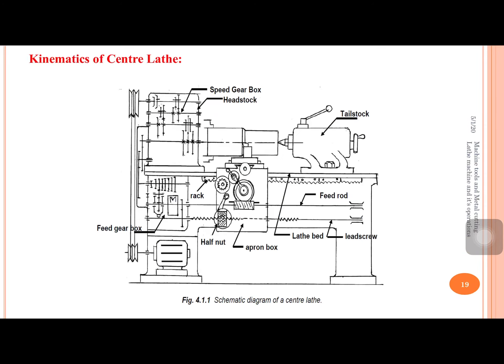Good afternoon friends. Today I received a query related to the kinematics of a center lathe, so let us start the discussion in this video. When talking about the kinematics of a center lathe, we need two kinds of motion: rotary motion for the work part and feed motion for the cutting tool. The cutting motion is the rotation of the work part. Feed motion has three kinds: longitudinal feed, cross feed, and angular feed. Longitudinal feed and cross feed are power-operated or manually driven, but angular feed is manually driven only.